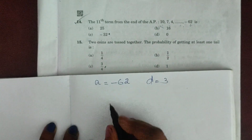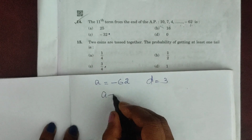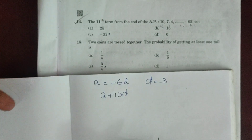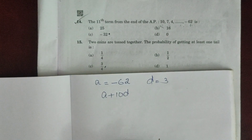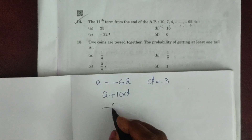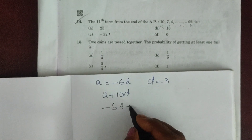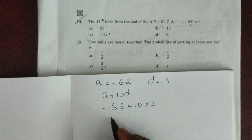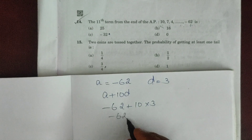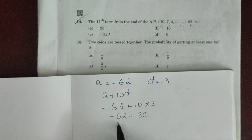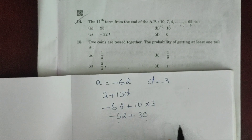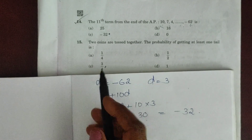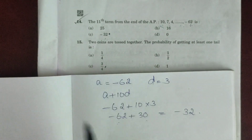We will find the 11th term, that is a + 10d. With a = -62 and d = 3: -62 + 10×3 = -62 + 30. Taking the difference, that is -32. So option C is the correct answer.